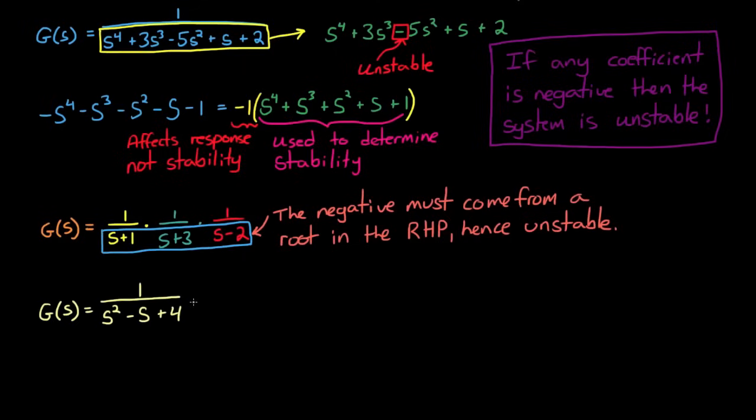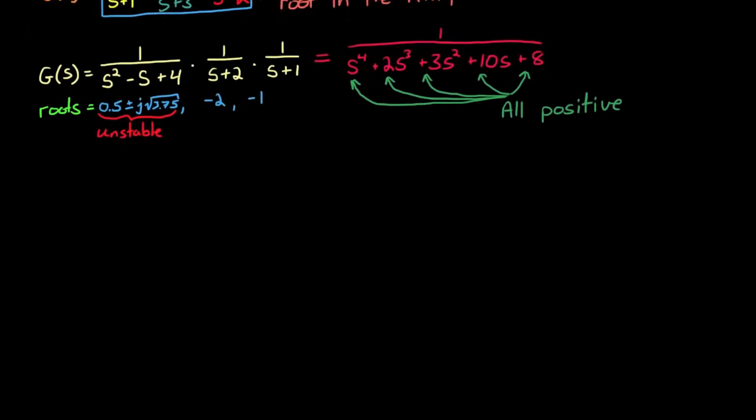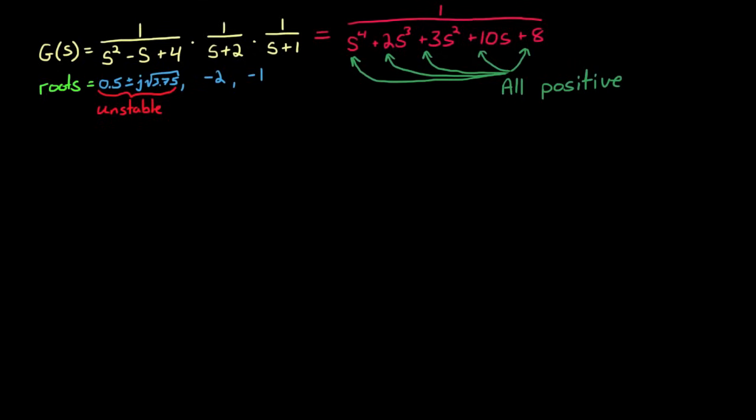However, you can have all positive coefficients and still have either a stable or unstable system. Let's demonstrate with this transfer function. The first part has roots at one half plus or minus j times the square root of 3.75. The second has a root at minus 2, and the third a root at minus 1. This system is clearly unstable since there are two roots in the right half plane. You can see this from the positive one half. However, when we multiply all of these out, we get one polynomial with all positive coefficients. So this just goes to show that you can have an unstable system with all positive coefficients. If we were given this system in this form, we could use the Routh-Hurwitz criterion to determine if the system is stable, and we would do this by filling out a Routh array.